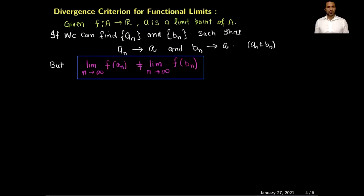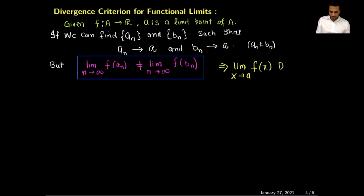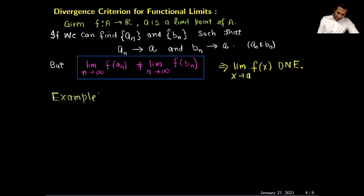Here is the second application of the previous theorem: the divergent criteria for limits. To prove that a limit does not exist, find two sequences a_n and b_n that both converge to the same limit point a. If plugging these sequences into the function produces different limits, then the limit of f(x) as x approaches a does not exist.